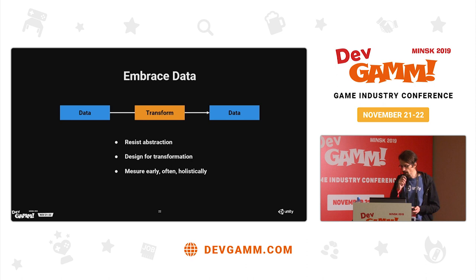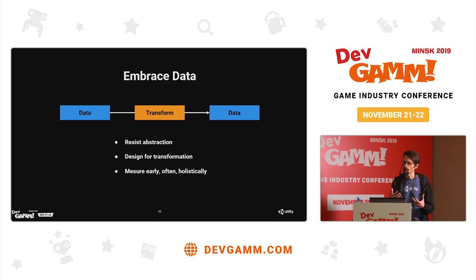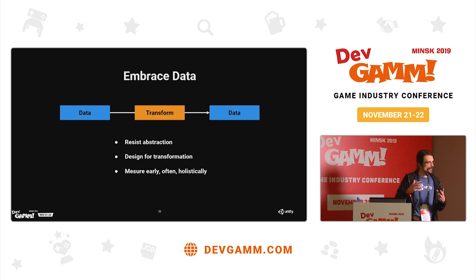So think about transformation. A good example: many of you have had to implement a save system on top of a game which was not designed for it. That's usually a very painful experience, because you realize that your data is all over the place and is not in a nice format for serialization. Typically at that point, you think: if I had designed my data to be minimal, well-structured, and grouped, that would have been a lot easier to serialize and load back. And also because the data tends to be grouped, accessible, and visible, you can also measure it and profile it frequently through the whole development.